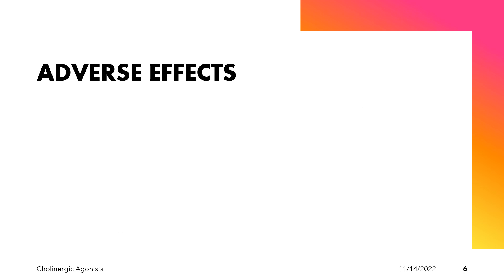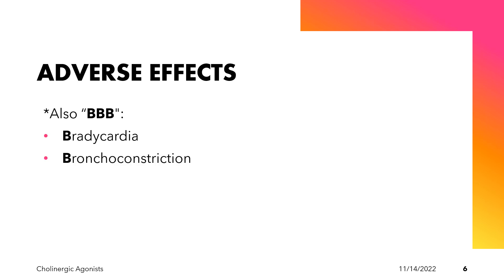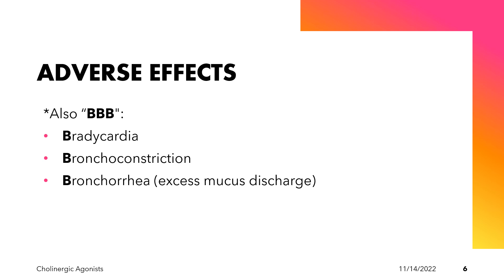The adverse effects of the cholinomimetic agents can also be remembered as Triple B: bradycardia, bronchoconstriction, and bronchorrhea. Bronchorrhea refers to an excess mucous discharge.